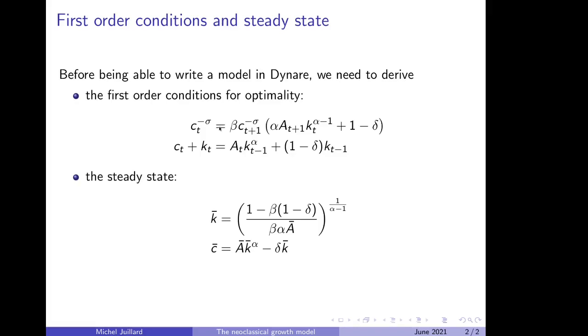Looking at the first order condition for optimality, you realize the difficulty that faces us. We have two equations for two unknowns, c_t and k_t. Until now, everything's fine, but you see that c_t depends upon c_{t+1} and k_t depends on k_{t-1}.